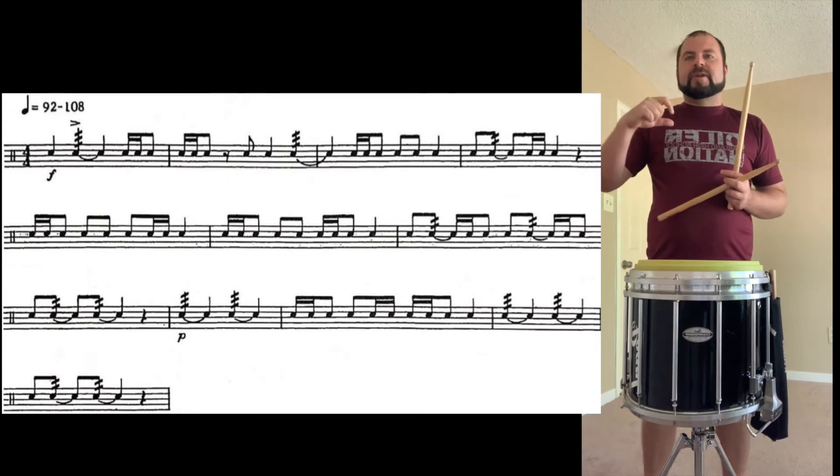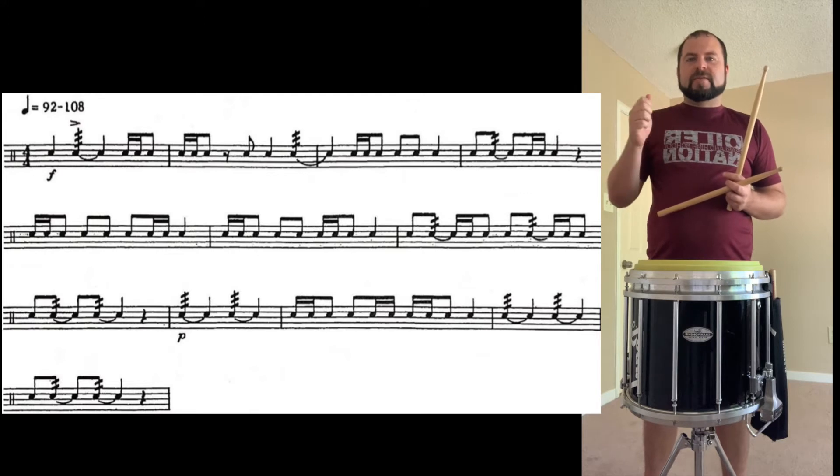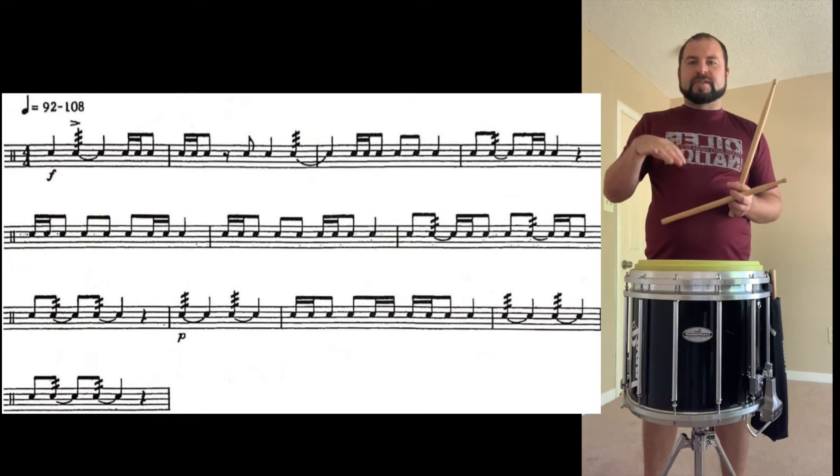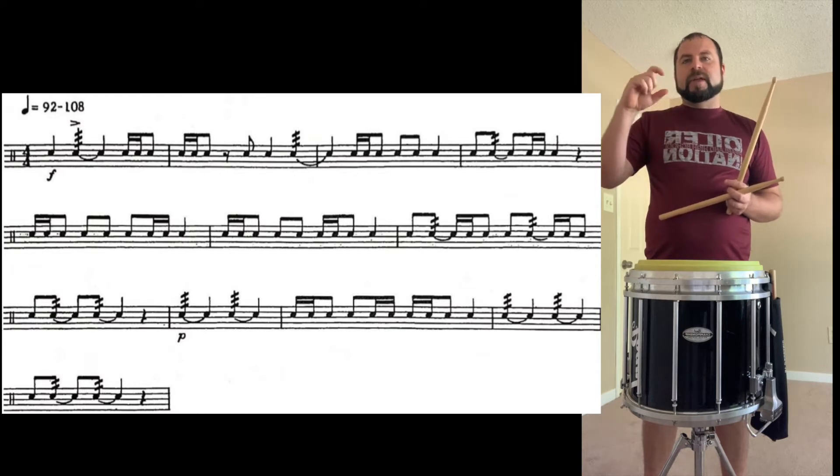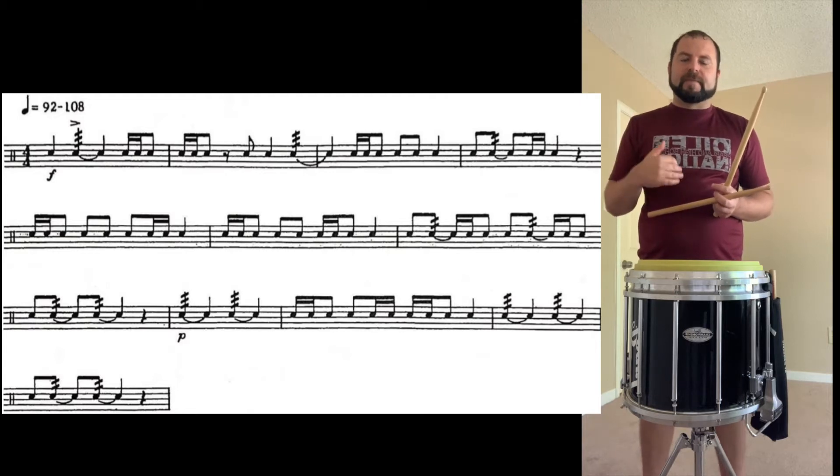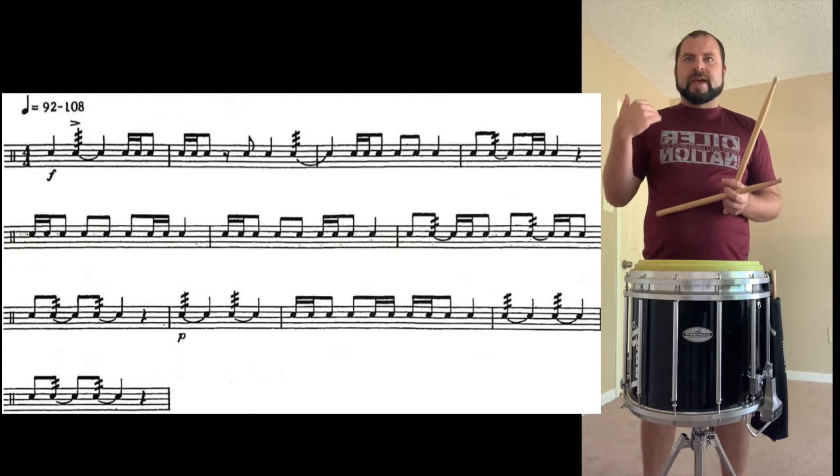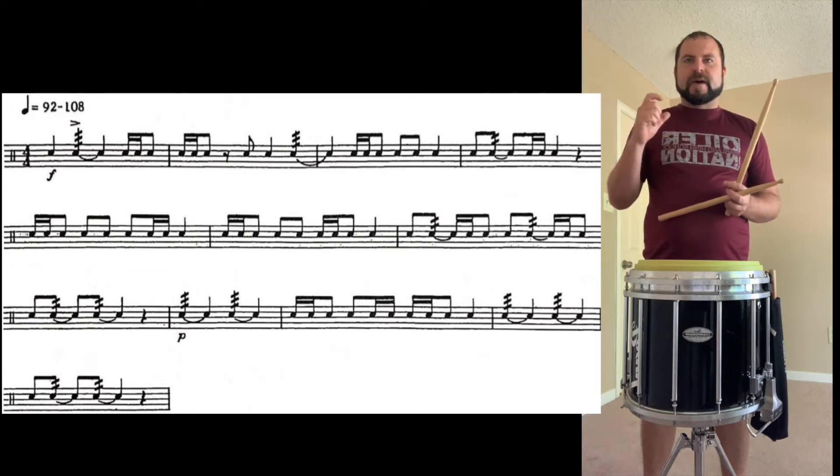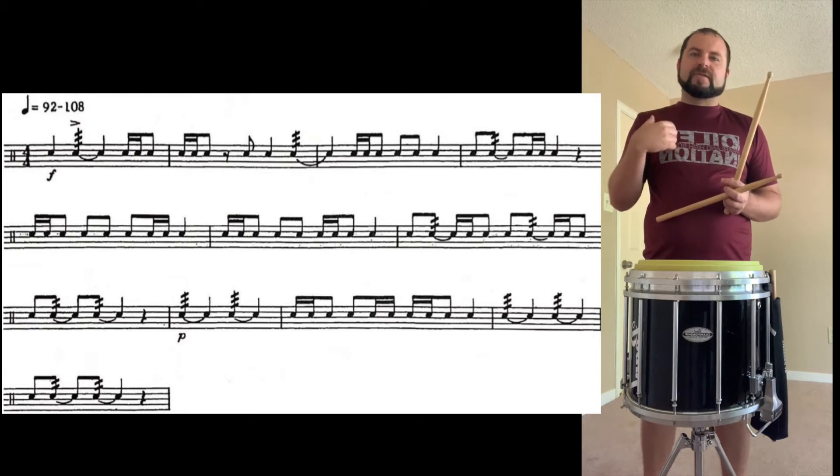Okay, so first thing you want to check out is your time signature, which is 4-4, and then scan through the whole piece to see if it changes. It doesn't, so we're always in 4. Then look at your tempo marking. So right above that you see it says quarter note equals 92 to 108. So I know in my head when we do these games and classes, if I know my tempo is between 92 and 108, it's a little bit slow, but it'll still work for us.